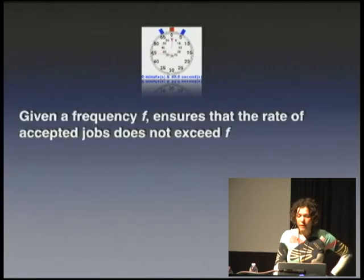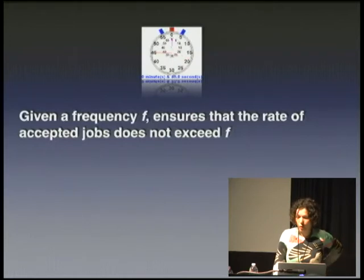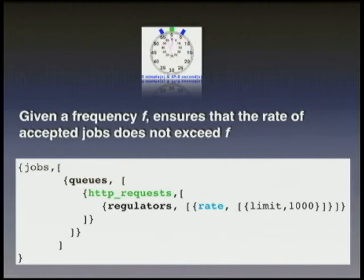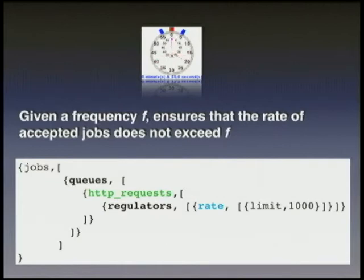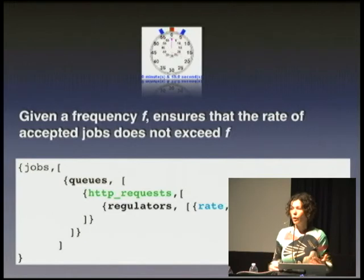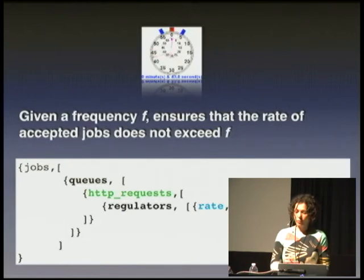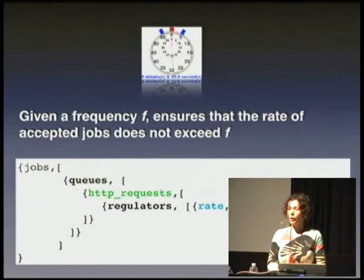To deal with this kind of situation, the Jobs framework has rate-based regulation. Given a frequency F, it ensures that the rate of accepted jobs does not exceed F. Here is how we set it up: we create a queue called HTTP request and assign a rate regulator to it with a limit of a thousand per second. That number I just pulled out of thin air — to come up with a good number, you really need to do some load testing of your HTTP server. If load testing reveals at some point it starts failing and doing unexpected things, that's the number you're going to put here.